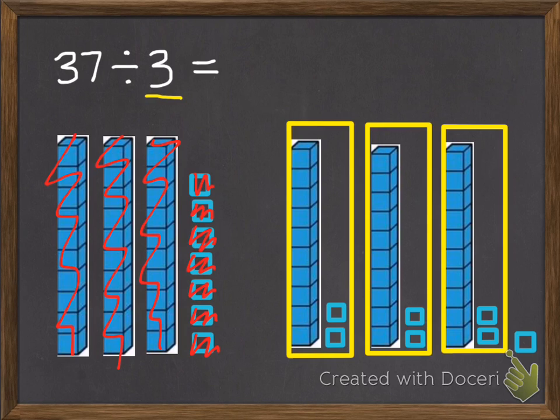And now all the groups are even and we have 1 left over. So our answer, we have 1 ten and 2 ones in each of these, which makes 12. And they all have 12. We want to make sure they all are even. Then we have this 1 extra. So this means 37 divided by 3 equals 12 with a remainder of 1. So your remainder is whatever is left over that you can't put into any of the groups or they'd be uneven.